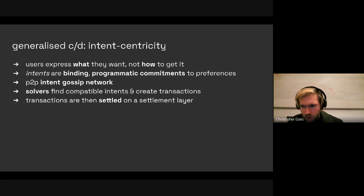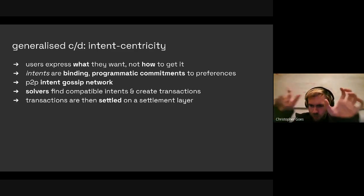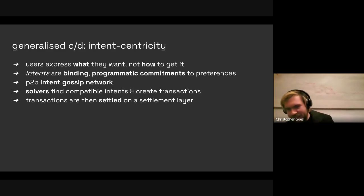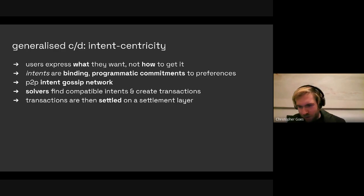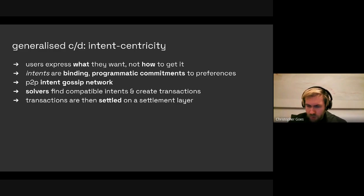In the architecture of Anoma, we incorporate counterparty discovery in a more native, programmatic way — what we call intent-centricity. In an intent-centric architecture, from when a user signs something to when they read a result back from the system, there are two phases: counterparty discovery and settlement. Settlement is where there's a transaction, we post it to a blockchain, and users read the state back. The thing which is new and interesting from a privacy standpoint is the first phase of counterparty discovery.